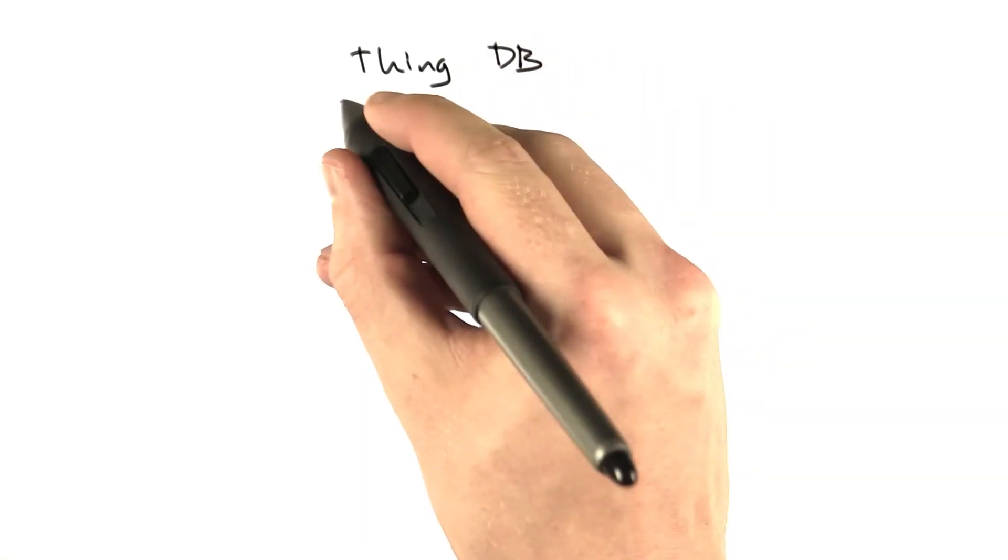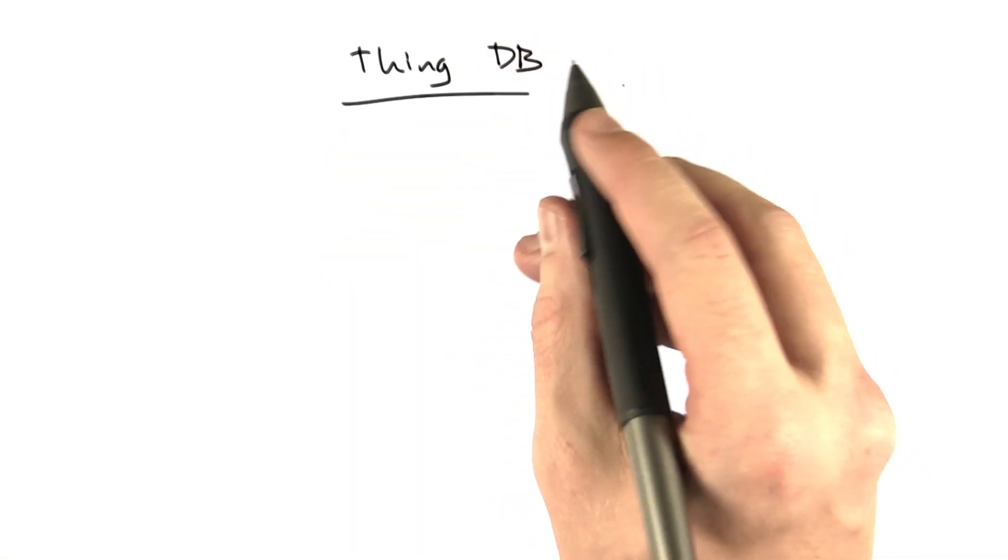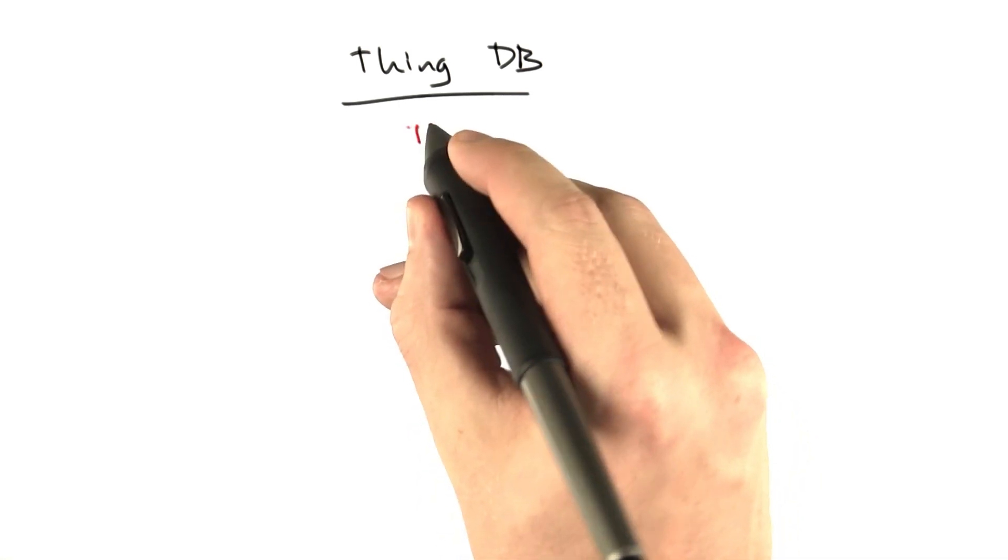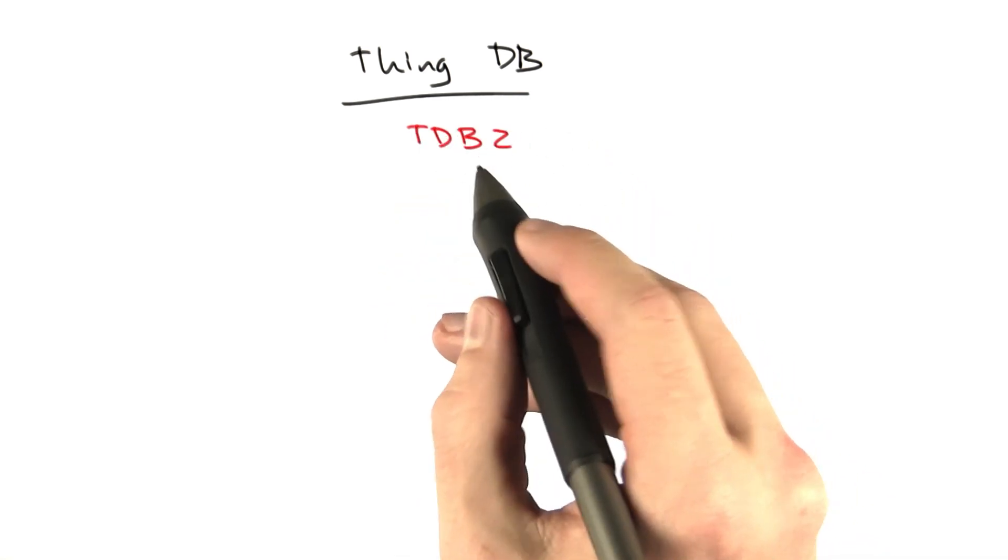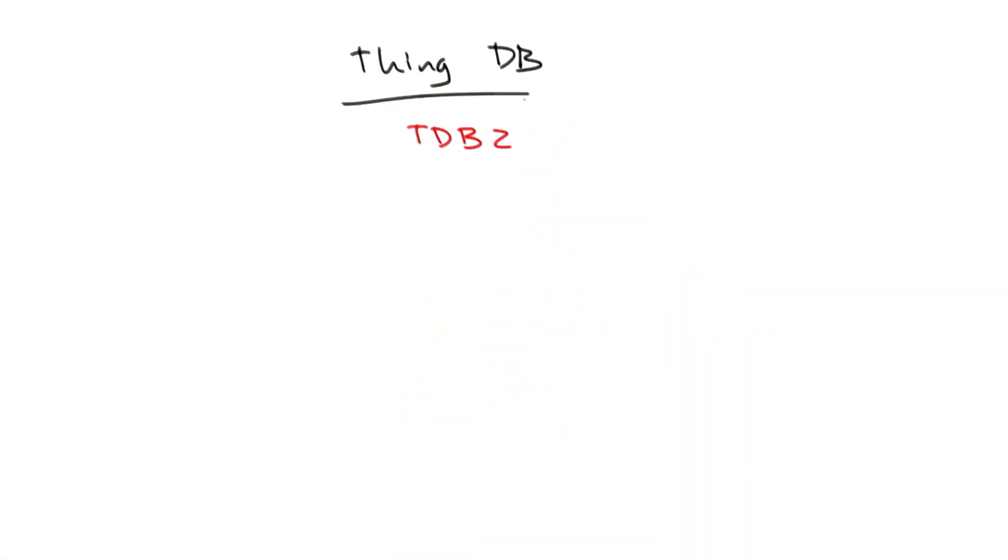So we switched to a thing called ThingDB, and it's still called, I think it's still called TDB in the Reddit code. So if you find any code that's called TDB or TDB2, this is the second version of the ThingDB that I wrote at some point. This is what it's referring to.